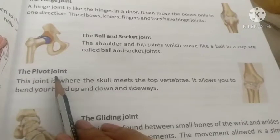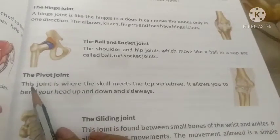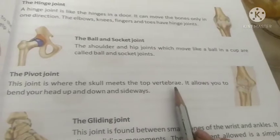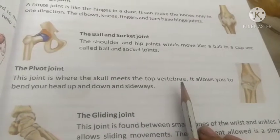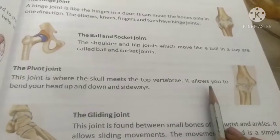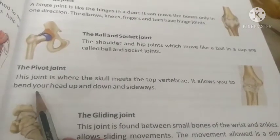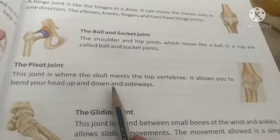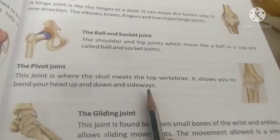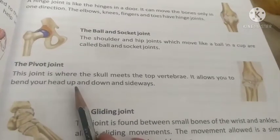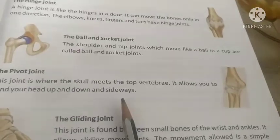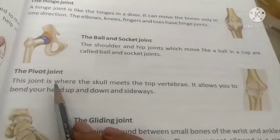The pivot joint is where the skull meets the top vertebrae. This joint allows you to move your head up and down and sideways. We can bend our head to the side. This is the pivot joint.